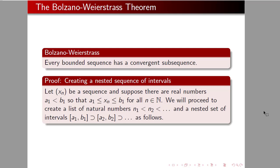We're going to begin our proof here by creating a nested sequence of intervals. We are, of course, going to apply the nested interval principle. Let x n be a sequence and suppose that there are real numbers a1 less than b1 so that a1 is less than x n is less than b1 for all n. This is just saying it's bounded, which we were given in our hypothesis.